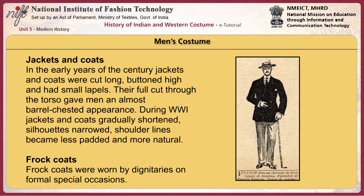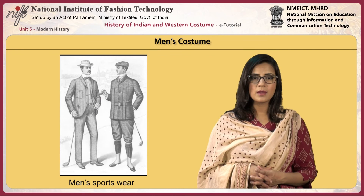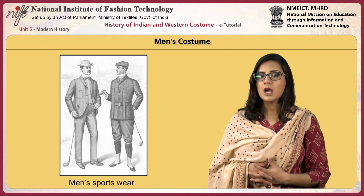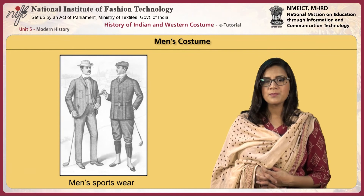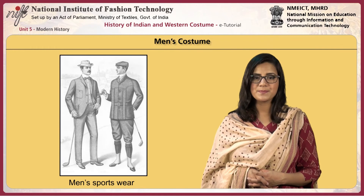Their full cut through the torso gave men an almost barrel-chested appearance. During the First World War, jackets and coats gradually shortened, silhouettes narrowed, and shoulder lines became less padded and more natural. Frock coats were worn by dignitaries on formal special occasions. Morning coats were worn for daytime formal occasions with matching trousers or contrasting waistcoats and striped trousers before the war. After the war, this costume was limited to upper class or political leaders for formal occasions. Sack jackets, also known as a lounge coat, became the standard suit jacket, also worn as a sports jacket. Shirts were worn in all colours, in solids as well as patterns, with high and stiff collars. After the war, less rigidly starched collars were preferred, and some collars were also detachable.